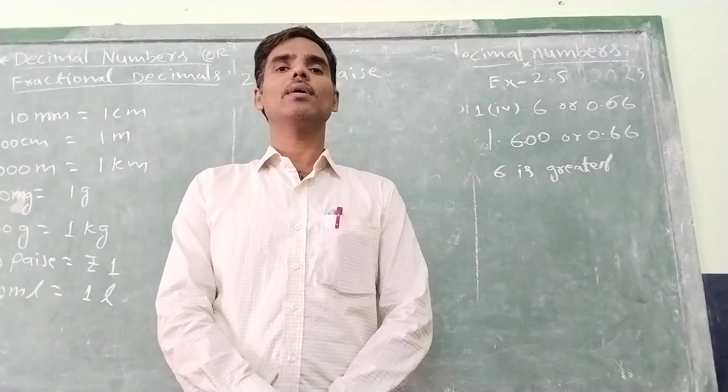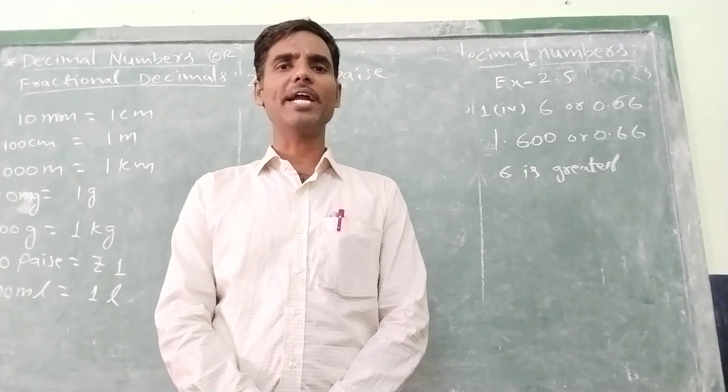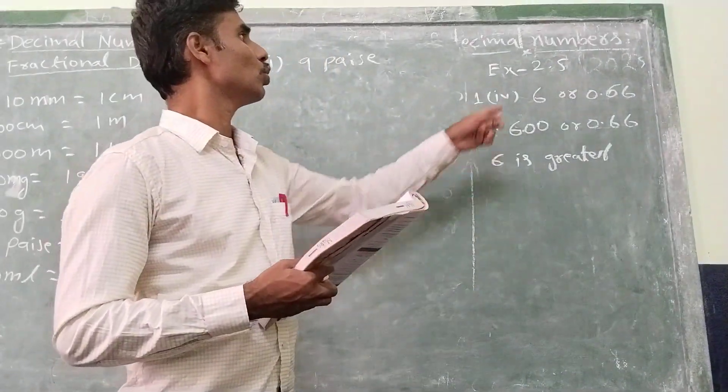7th class, 2nd chapter: fractions, decimals and rational numbers. Exercise 2.5.